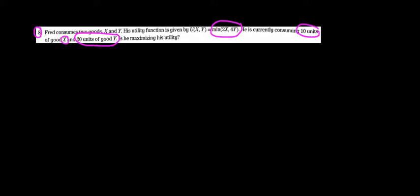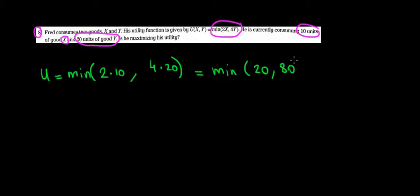Let's work with math as much as we can and then we'll reason with our common sense. So utility is equal to the minimum value between 2 times X, so 2 times 10 units of X, and 4 times Y, so 4 times 20 units of Y. That's equal to the minimum between 20 and 80. Now the minimum between these two is just 20, so the result is just 20. Our utility is 20.